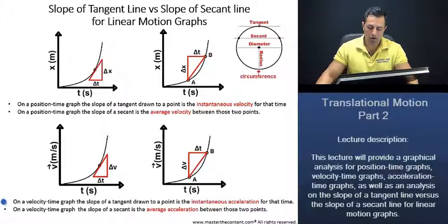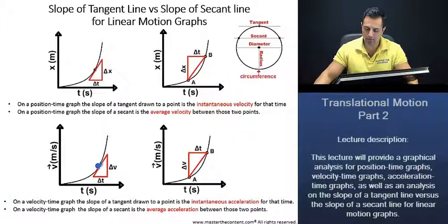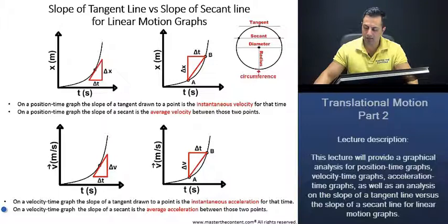On a velocity time graph, the slope of a tangent drawn to a point is the instantaneous acceleration for that time. Thus, that there is our instantaneous acceleration. On a velocity time graph, the slope of a secant is the average acceleration between those two points.